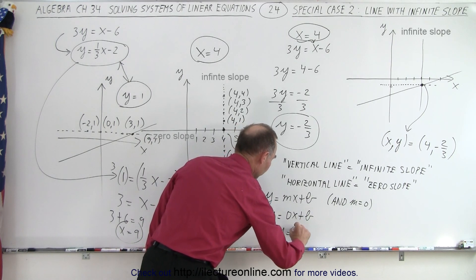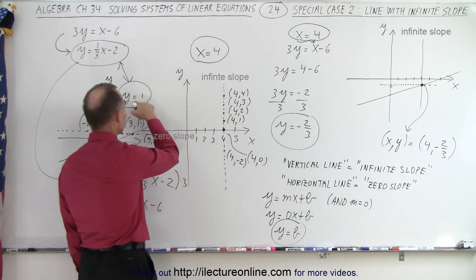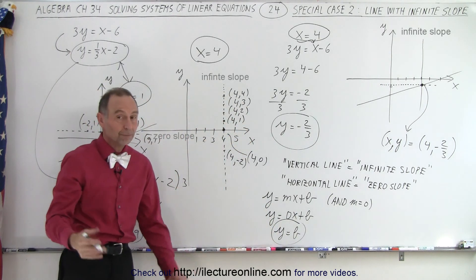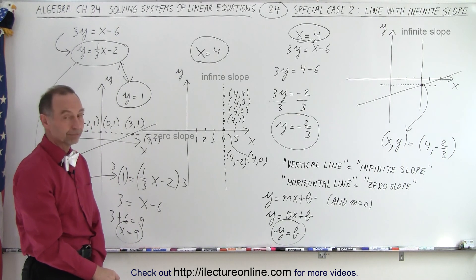So anytime you have y equals a number without the x, like in here, that indicates it's a zero slope. It's obvious now that you're first learning it. It's kind of weird.